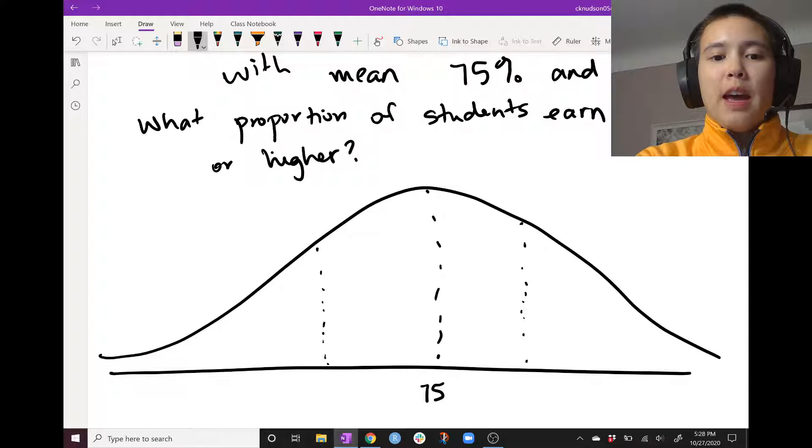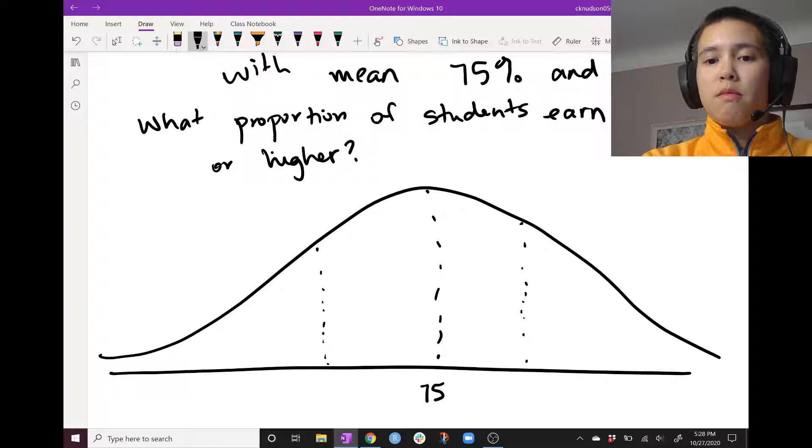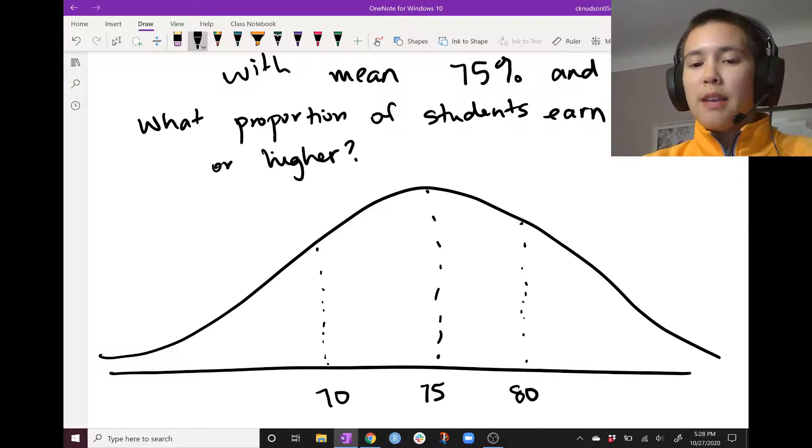We know that our mean is 75% and standard deviation sigma equals 5%. So if we look at mu plus one sigma, that would be 75 plus five or 80. And then here's 75 minus five, or in other words, 70.